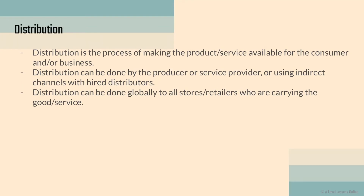Distribution is how we get things into the consumer's hands — it is the process of making the product available for the consumer or business. It can be done by the producer or a service provider like FedEx, or via indirect channels with hired distributors. Distribution can be done globally to all stores carrying the product. For example, you find iPhones and Apple products in almost every country because Apple is a TNC operating via a GPN — they want to distribute and retail their goods all across the world.